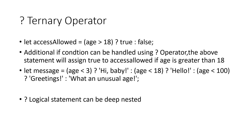The first line says: let access allowed — if age is greater than 18, it assigns true or false behind the question mark. You can also nest further into the ternary operator. The first condition checks less than 3.